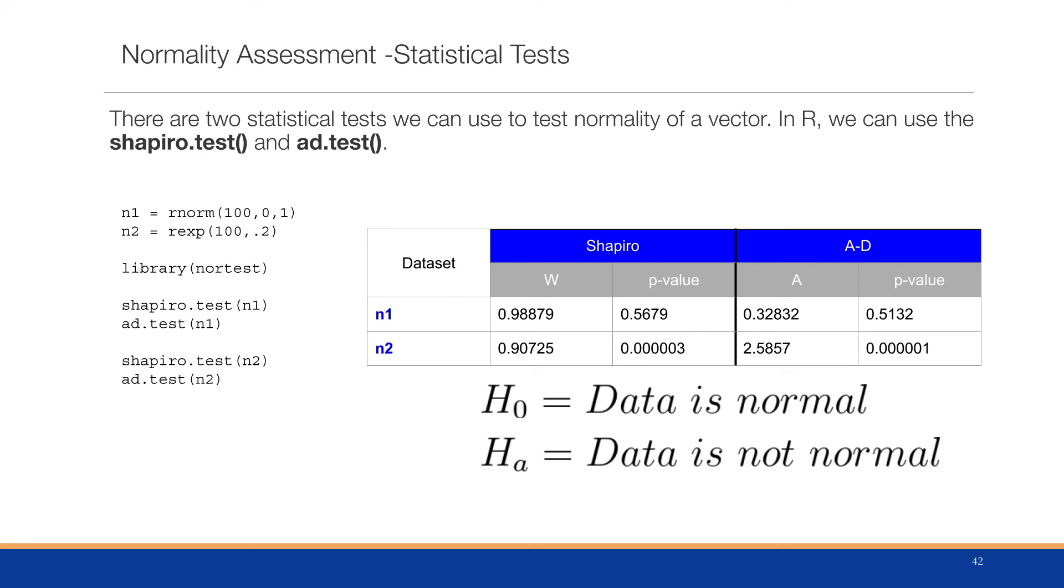When we run the Shapiro test for n1, we can see that the p-value is 0.5679. So since it is greater than 0.05, we will not reject the null hypothesis and we can state that we have evidence that the data is normal because we cannot reject the null hypothesis.